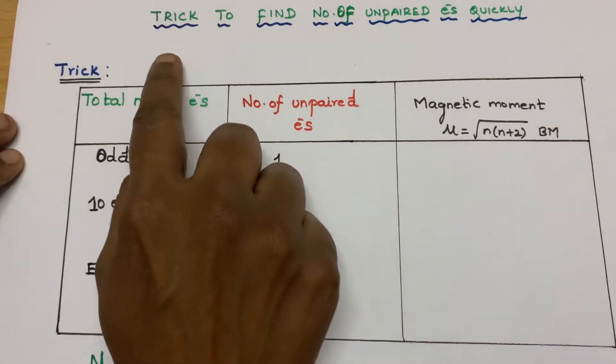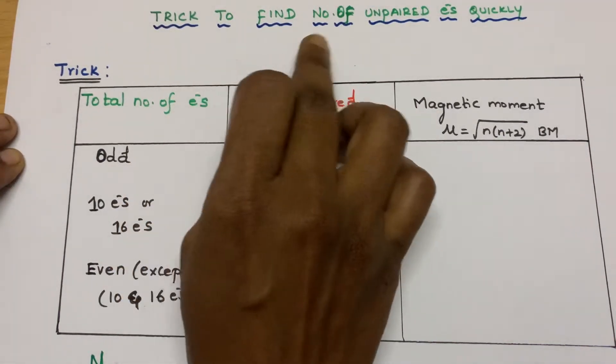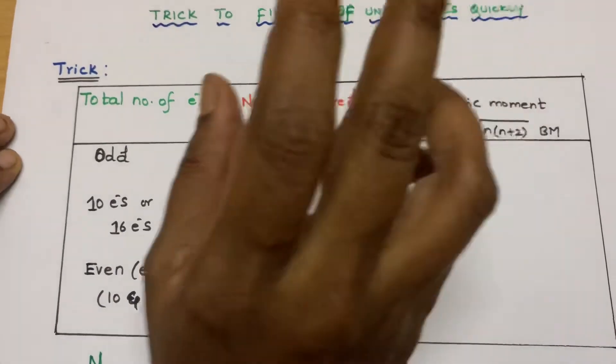Students, in this video I am going to reveal the trick to find the number of unpaired electrons quickly, that is in no time.